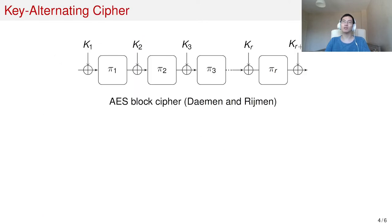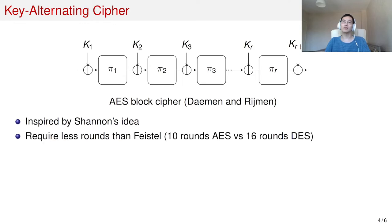Another important class of ciphers is designed using the key-alternating cipher structure. A famous example is the AES block cipher. The authors were inspired by Shannon's idea. Key-alternating ciphers have the property that they usually require fewer rounds than Feistel ciphers. For example, only 10 rounds are needed for 128-bit keyed AES, while 16 rounds are needed for the DES block cipher.